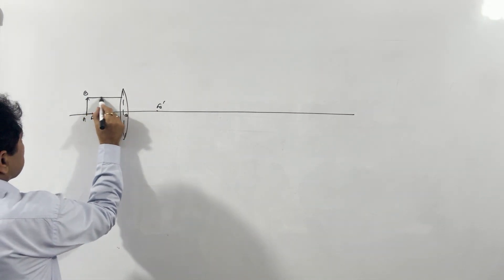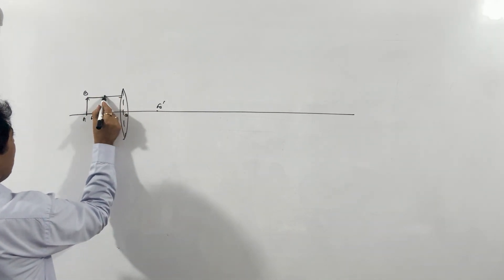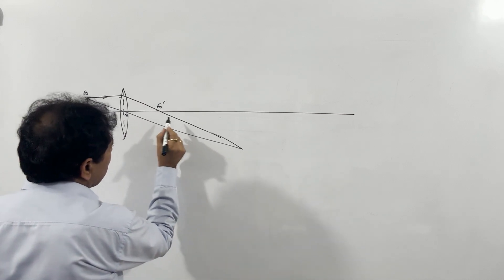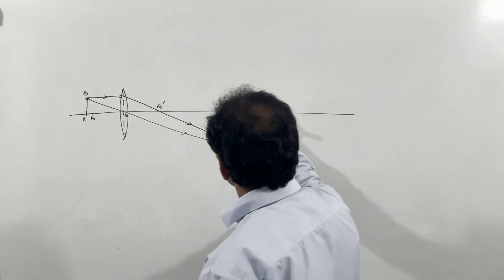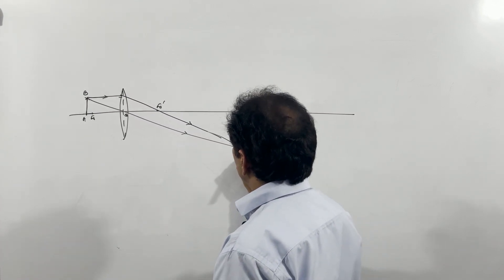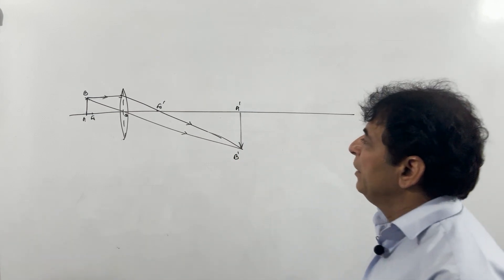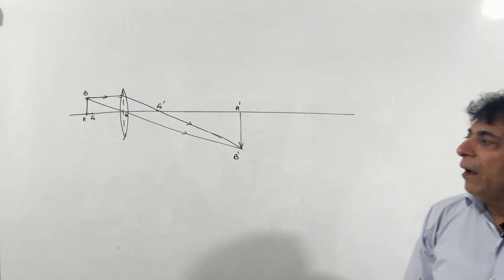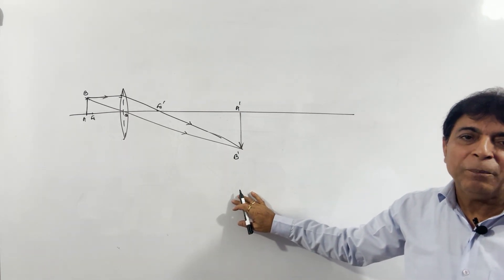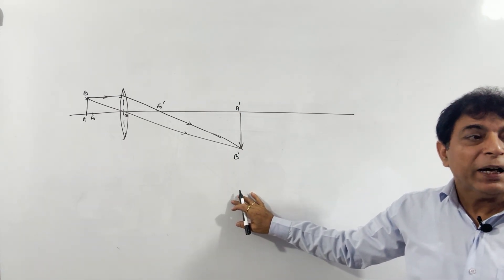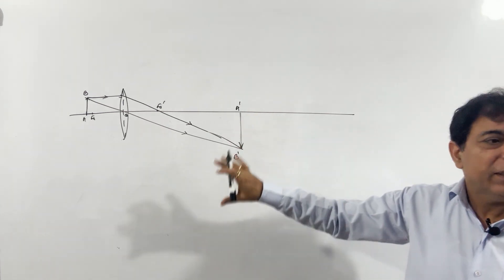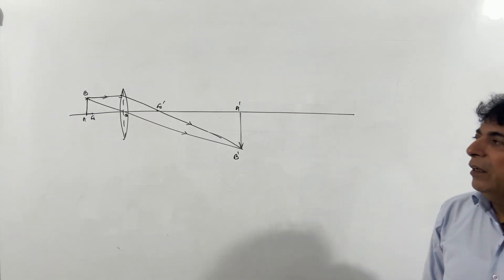A ray parallel to the principal axis will pass through the focus. Another ray through the optical center O goes undeviated. The image is formed — it should not be too large. Note points A and B carefully. If this image is made too large, then when the next image forms it will go outside the field of view. So we don't want it to be too large — pay attention to this.